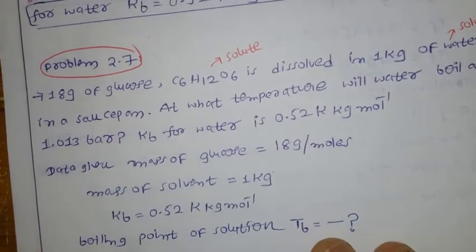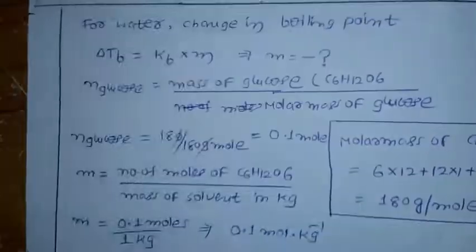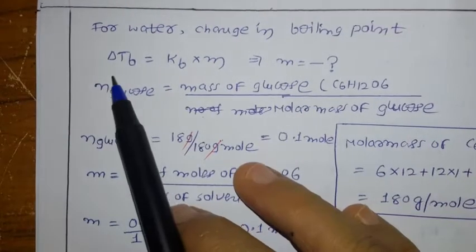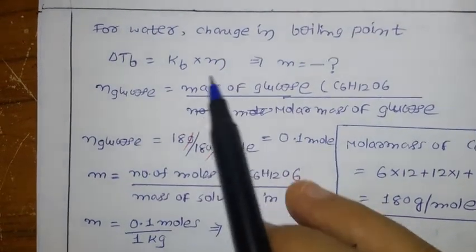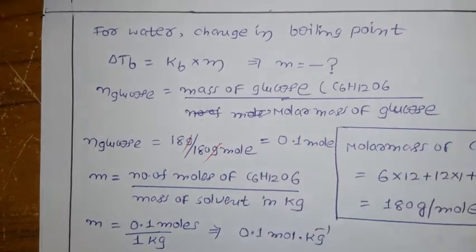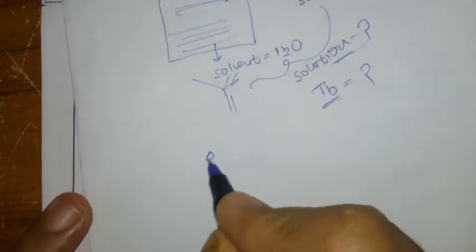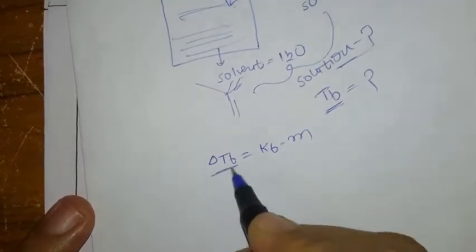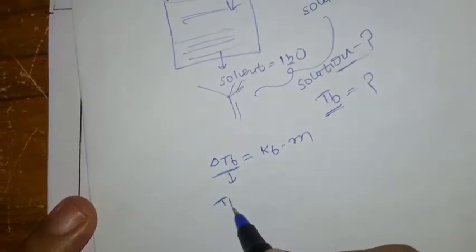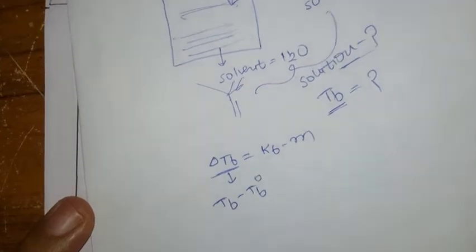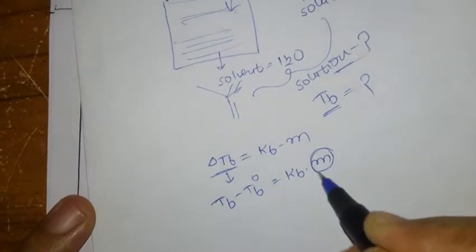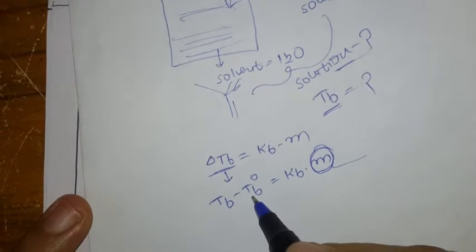For water, we use the relation: ΔTb = Kb × molality. But molality is not directly given. We know ΔTb = Tb − Tb°. We don't have molality directly, so we need to calculate it.